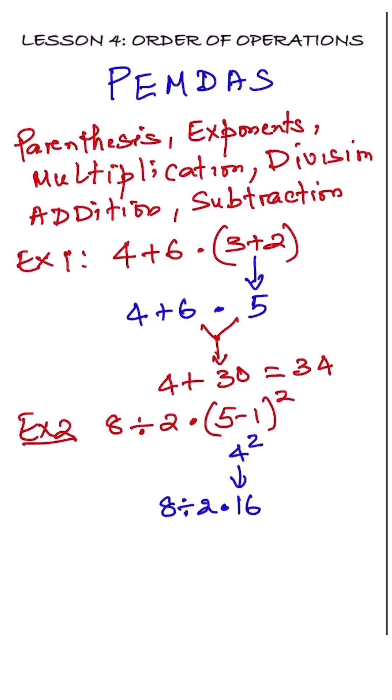Multiplication and division share the same level, so you go left to right. 8 divided by 2 equals 4, and 4 times 16 equals 64. That's your final answer.